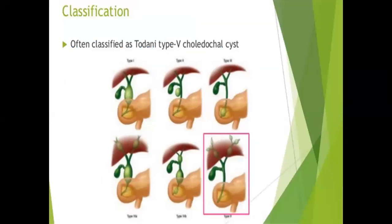According to the Todani classification, this is Type 5 (Caroli disease). Type 1 is focal extra-hepatic; Types 2 and 3 are rare; Type 4 involves diffuse extra-hepatic extending to intra-hepatic (Type 4A) or only extra-hepatic (Type 4B); and Type 5 is the intrahepatic form — Caroli disease.